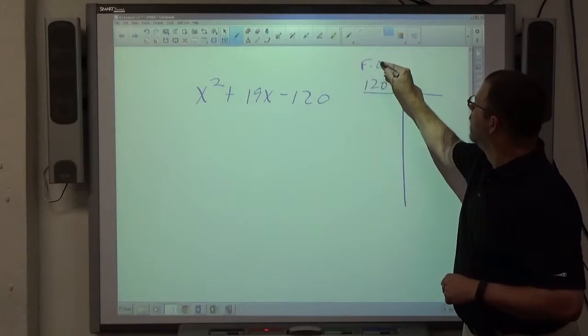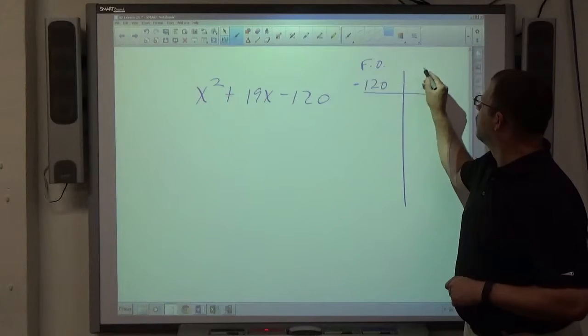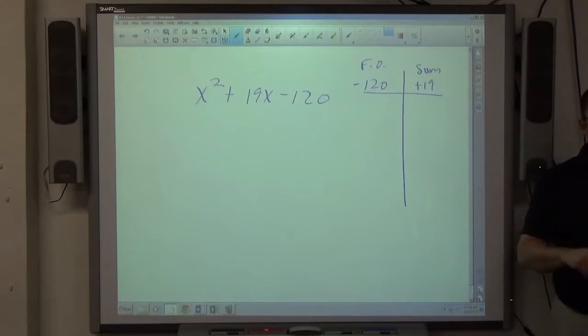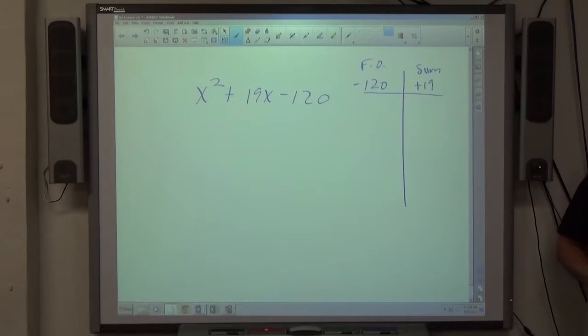We want factors of -120 whose sum is positive 19. So opposite signs make the negative. The bigger number has to be positive so that we get a positive sum.